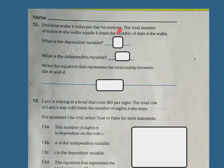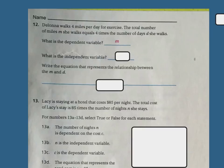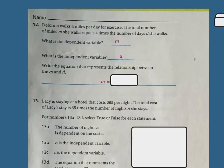Delauny walks 4 miles per day for exercise. The total number of miles, M, she walks equals 4 times the number of days, D, she walks. What is the dependent variable? The dependent variable is M, because that is the total number — it's the answer. The independent variable is D, the amount of days that she walks. So M equals 4 times D.